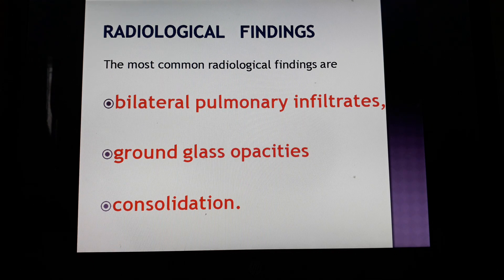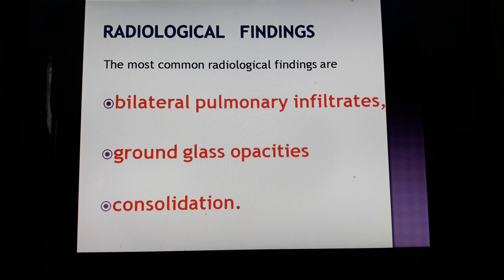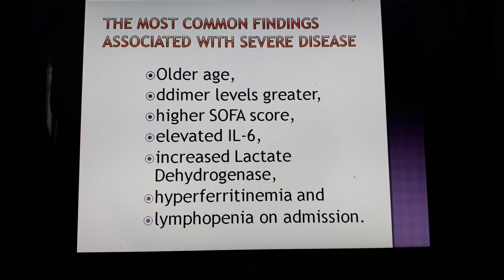Now we will discuss radiological findings. If a COVID-19 patient is infected and has signs and symptoms, what will we find on X-ray? There are three main radiological findings. The first and very important radiological finding is bilateral pulmonary infiltrates. The second important finding is ground glass opacities. The third important radiological finding is consolidation.